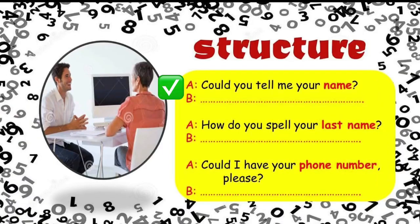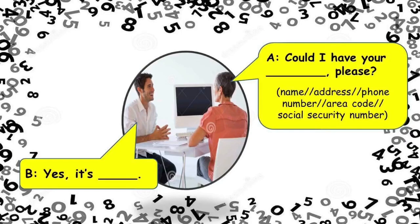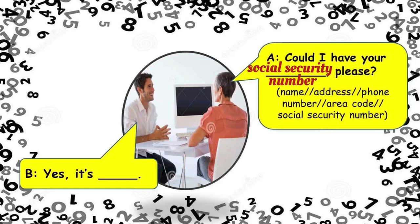Could you tell me your name? How do you spell your last name? Could I have your phone number, please? Examples: Could I have your name, please? Could I have your address, please? Could I have your phone number, please? Could I have your area code, please? Could I have your social security number, please?